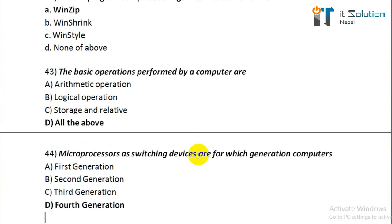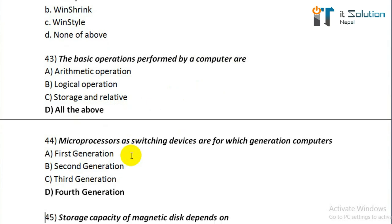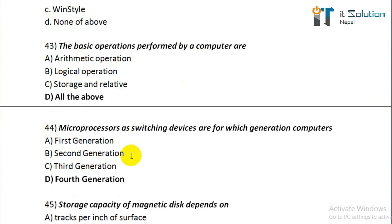Question number forty-three: the basic operations performed by a computer are? Its correct answer is option D, all of the above. Question number forty-four: microprocessor edge switching devices are for which generation of computer? Its correct answer is fourth generation.